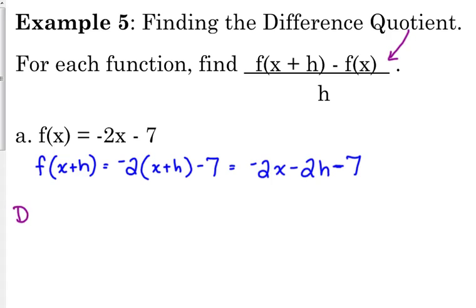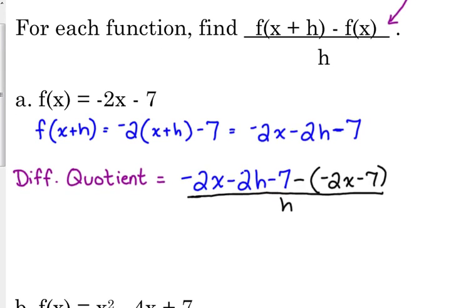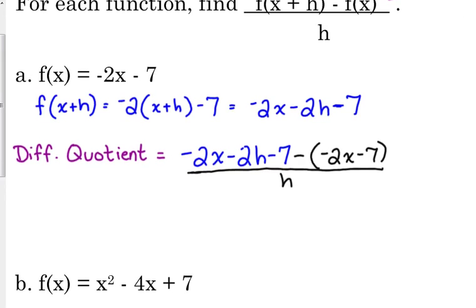Okay, so here comes my difference quotient. It says take f of x plus h - we just found that - negative 2x minus 2h minus 7. We're going to subtract f of x, which is negative 2x minus 7, and it is all over h. That is what the function is.